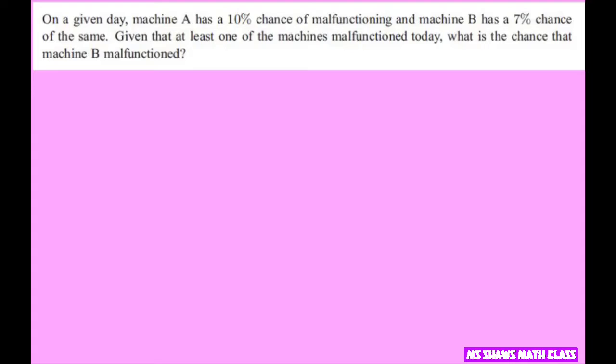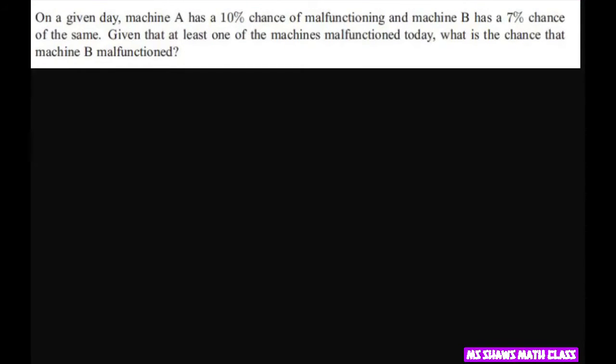Given that at least one of the machines malfunctions today, what is the chance that Machine B malfunctioned? So, let's do a little tree diagram and do Machine A first.